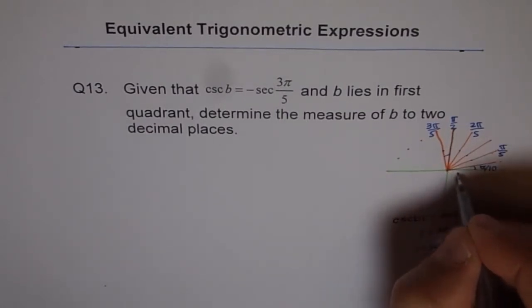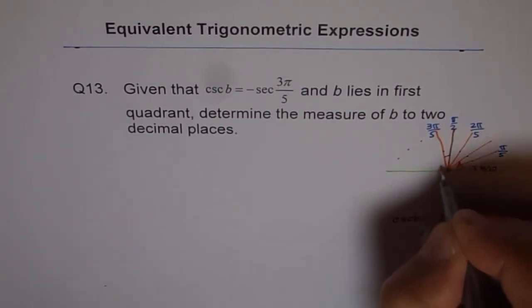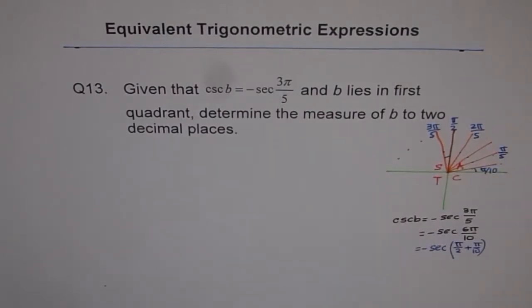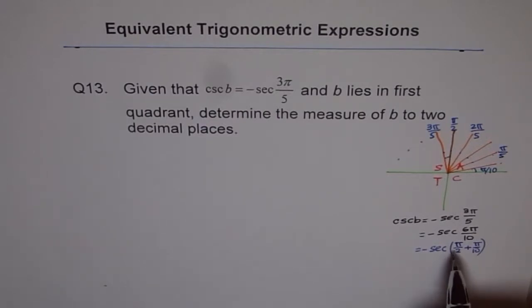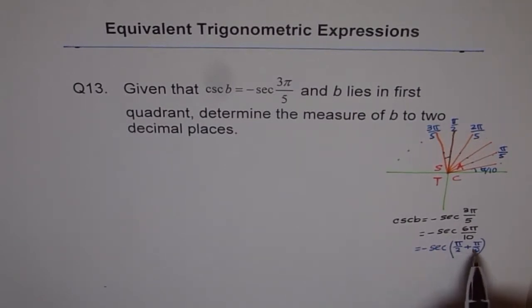C, A, S, T. Now we know one thing, whenever it is π/2 plus θ or π/2 minus θ is a co-function identity. Secant will change to cosecant. Sine will change to cos. Cos will change to sin. Tan to cot, like that, correct.